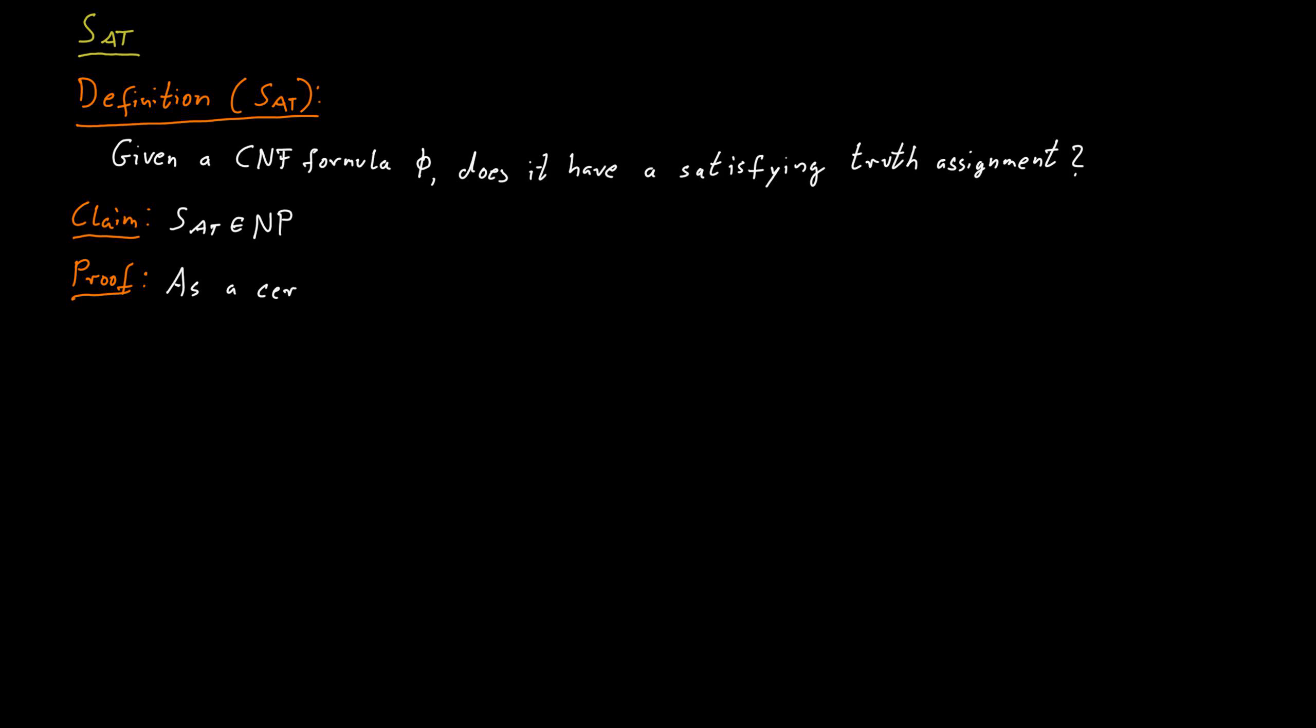If a formula is satisfiable, then as a certificate, we can simply use a truth value for all of the n variables. So for each of the variables, we would indicate whether it should be set to true or to false.